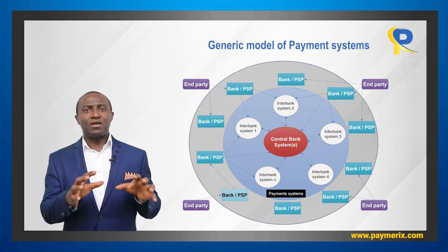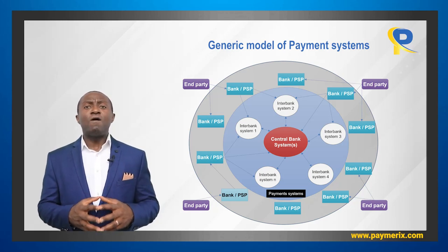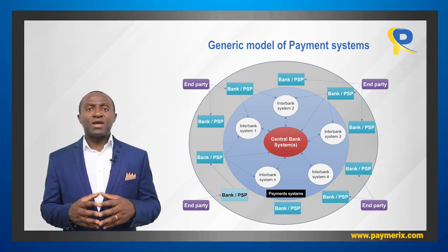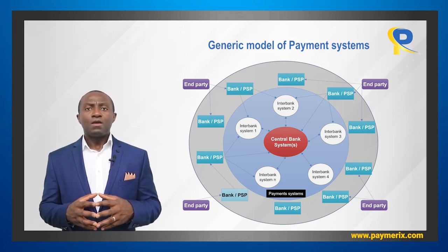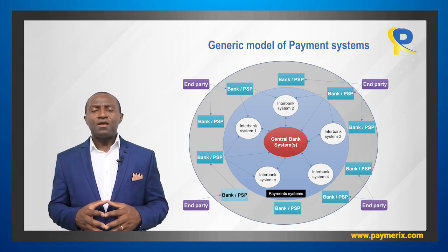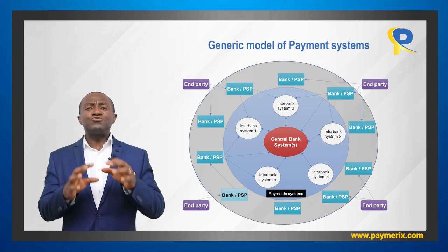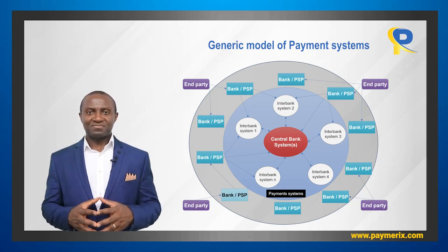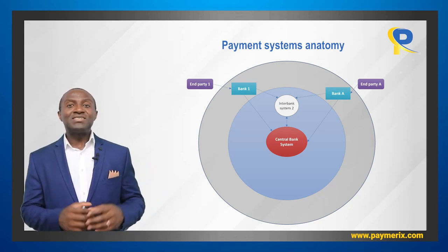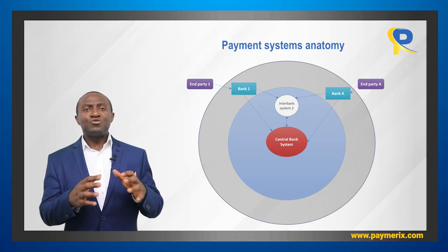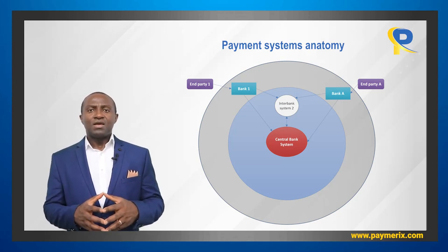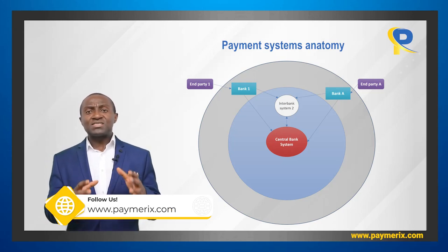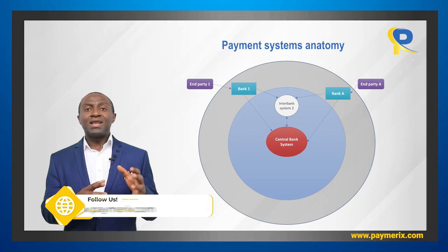Look at this picture carefully and let's do a simple exercise. Let's remove all the interbank systems except one, and also remove all banks except two banks. For each bank, we keep the end party that is connected to it. This is the end result: we see two banks on the picture. Each bank is connected to interbank system 2 and to the central bank system, and each bank is also connected to an end party. Banks have been renamed Bank 1 and Bank A to ease the understanding.